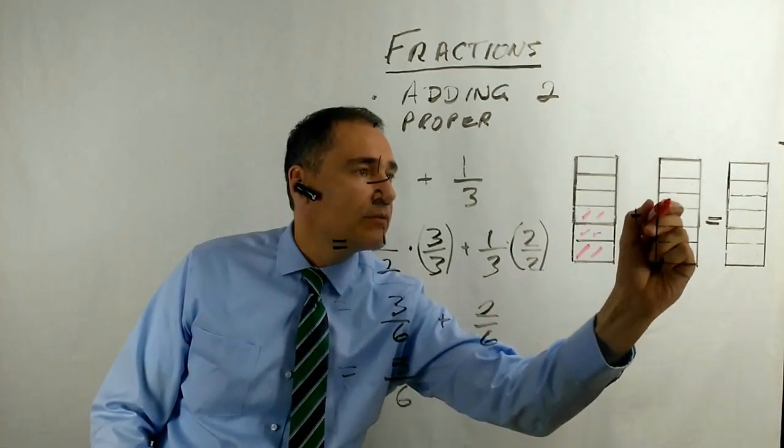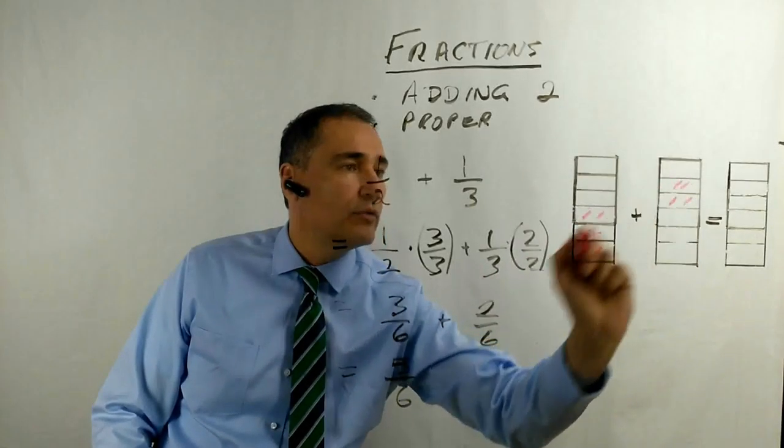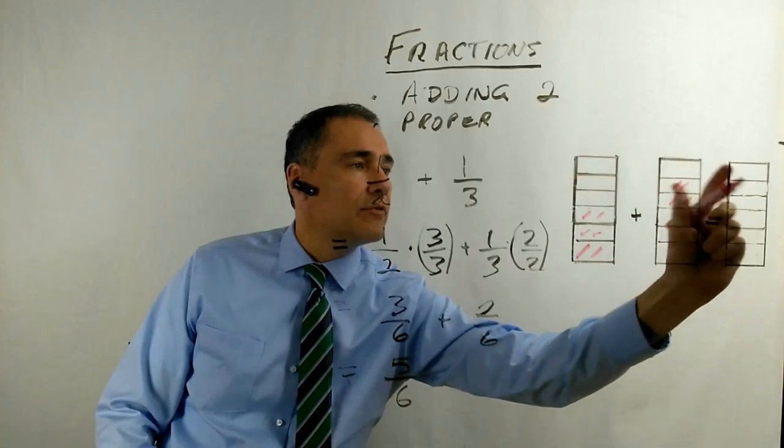And then 2 over 6, that's right here: 1, 2. Now when we add these together, just move them along.